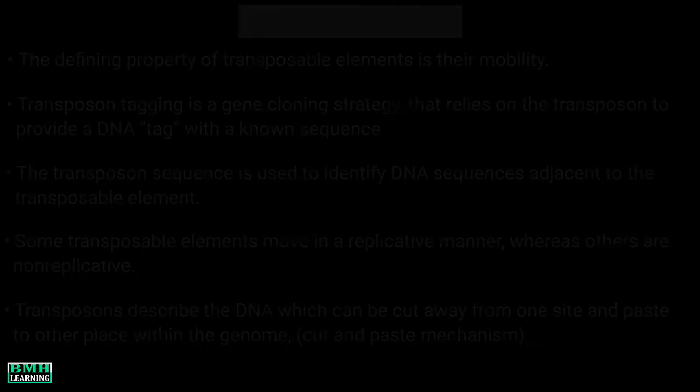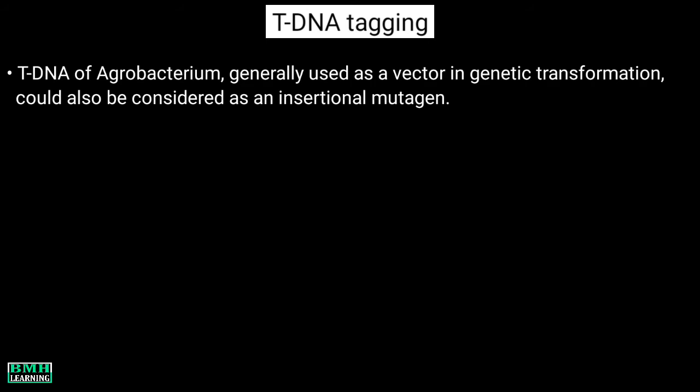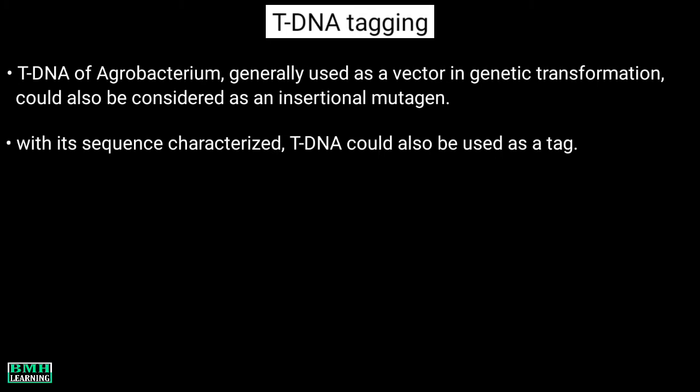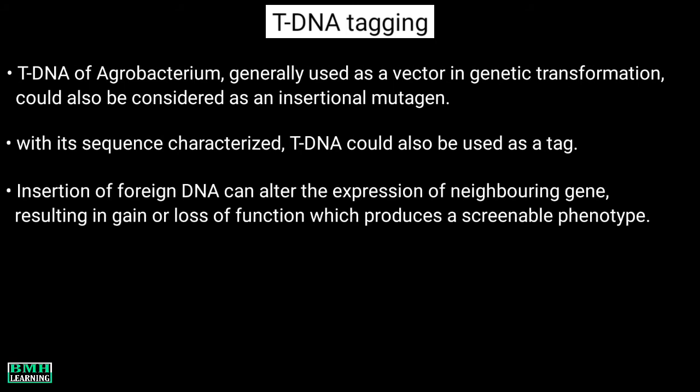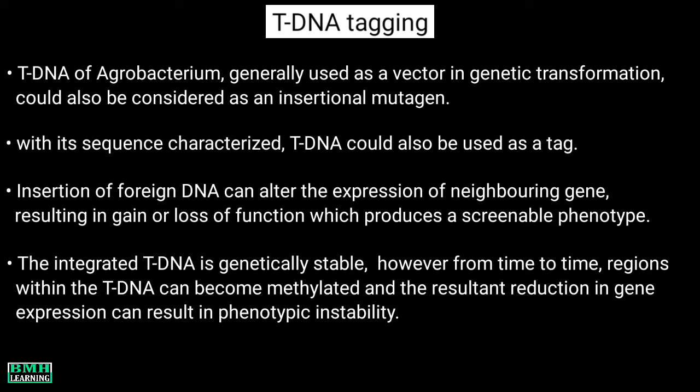The third type of gene tagging is tDNA tagging. The tDNA of Agrobacterium, which is generally used as a vector in genetic transformation, could also be considered as an insertional mutagen. With its sequence characterized, tDNA could also be used as a tag. The insertion of foreign DNA can alter the expression of the neighboring gene, resulting in gain or loss of function which produces a screenable phenotype. The integrated tDNA is genetically stable; however, from time to time, regions within the tDNA can become methylated, and the resultant reduction in gene expression can result in phenotypic instability.